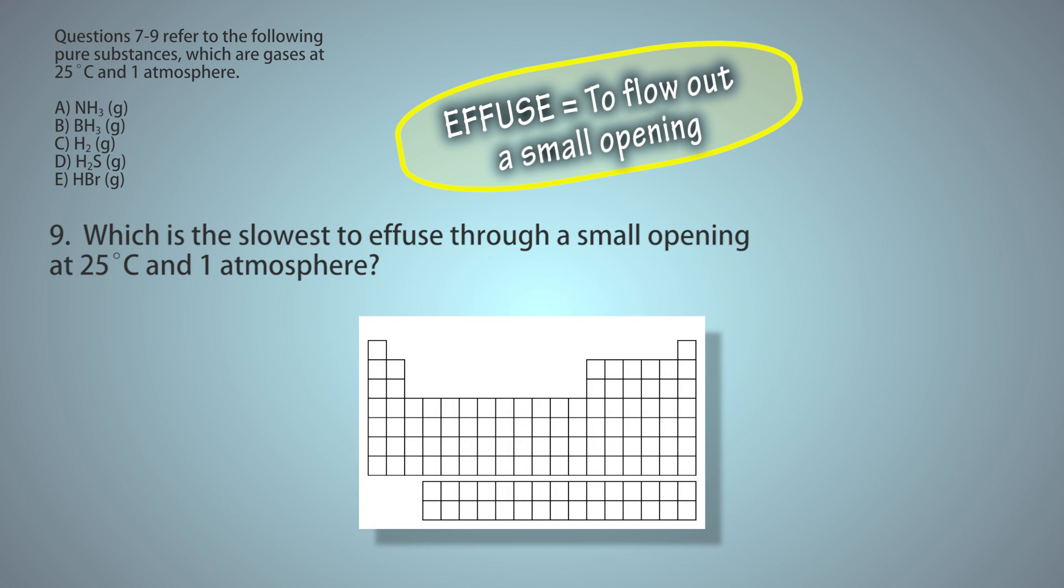You'll use the periodic table to find the gramatomic mass of each atom, and then sum them together. I'm going to use the values from the periodic table they attach to this test. Because the one that I have has more decimal places, so you'd get a slightly different answer.